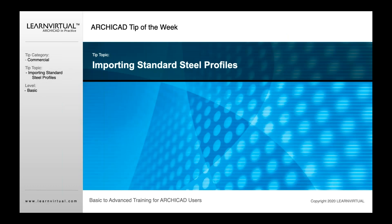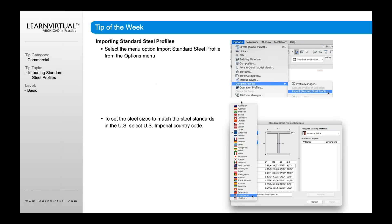Now, if you need to import Standard Steel Profiles or Custom Profiles, then what you want to do is go to your Options menu, go down to Complex Profiles, and click Import Standard Steel Profiles.